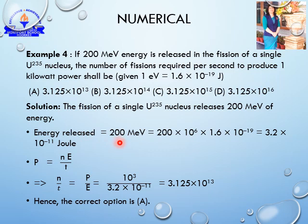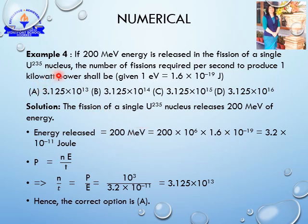Energy released per fission = 200 million electron volts. Million is 10⁶, and 1 eV = 1.6 × 10⁻¹⁹ joules. So energy = 200 × 10⁶ × 1.6 × 10⁻¹⁹, which gives 3.2 × 10⁻¹¹ joules. It is also given that the power produced equals 1 kilowatt.